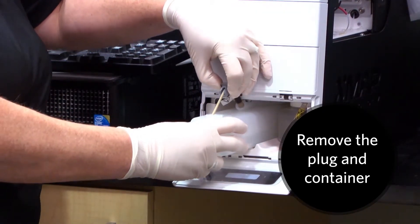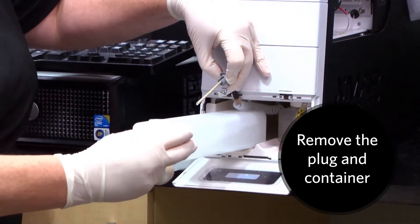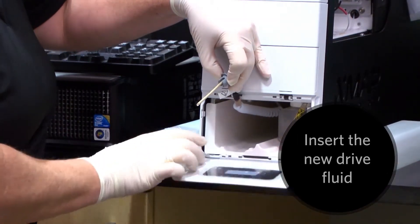Remove the tube and plug from the old dry fluid container on the left side of the fluid compartment and take out the container.